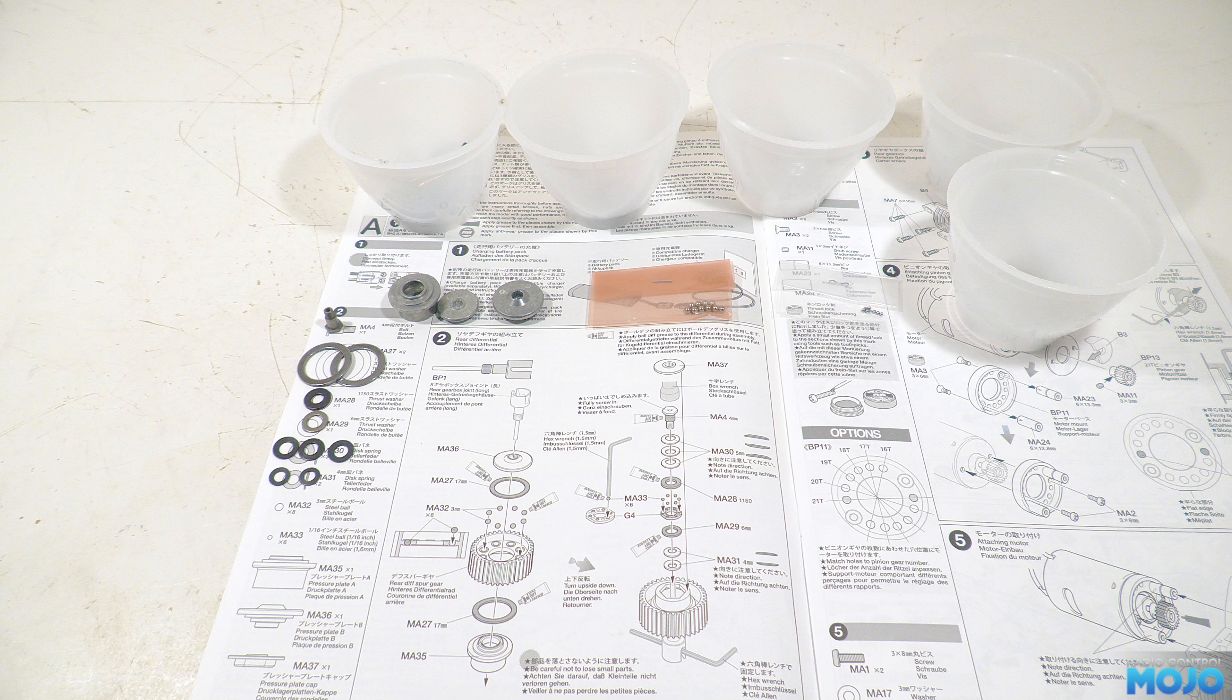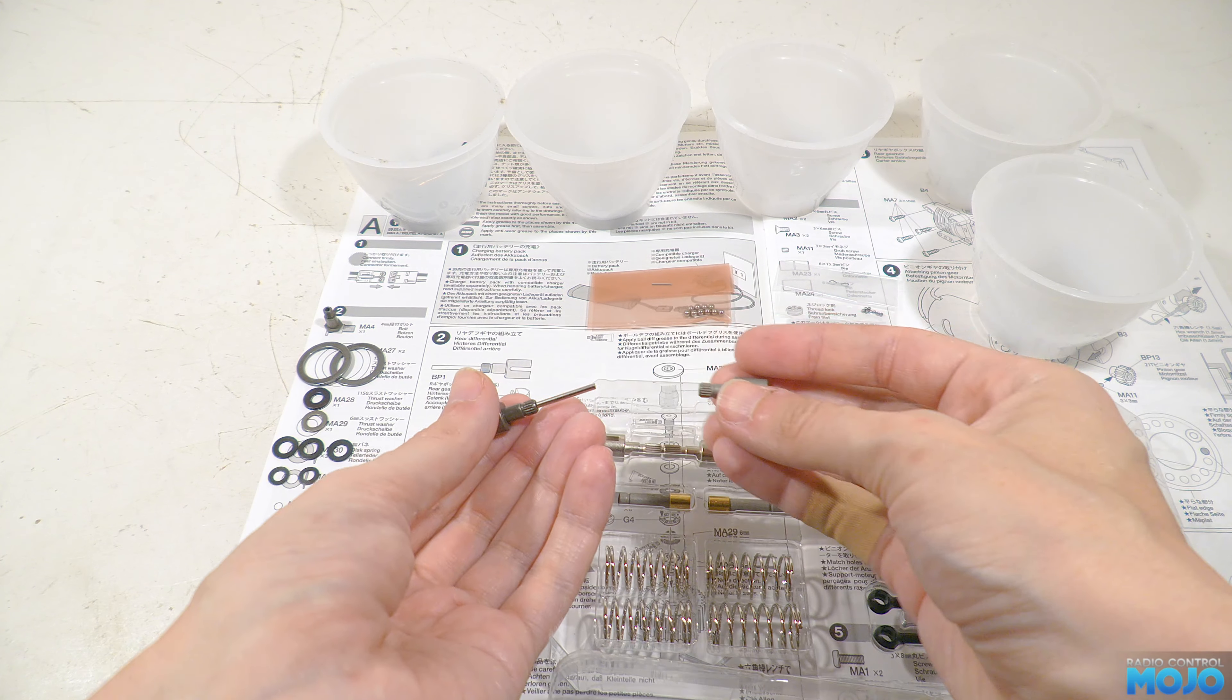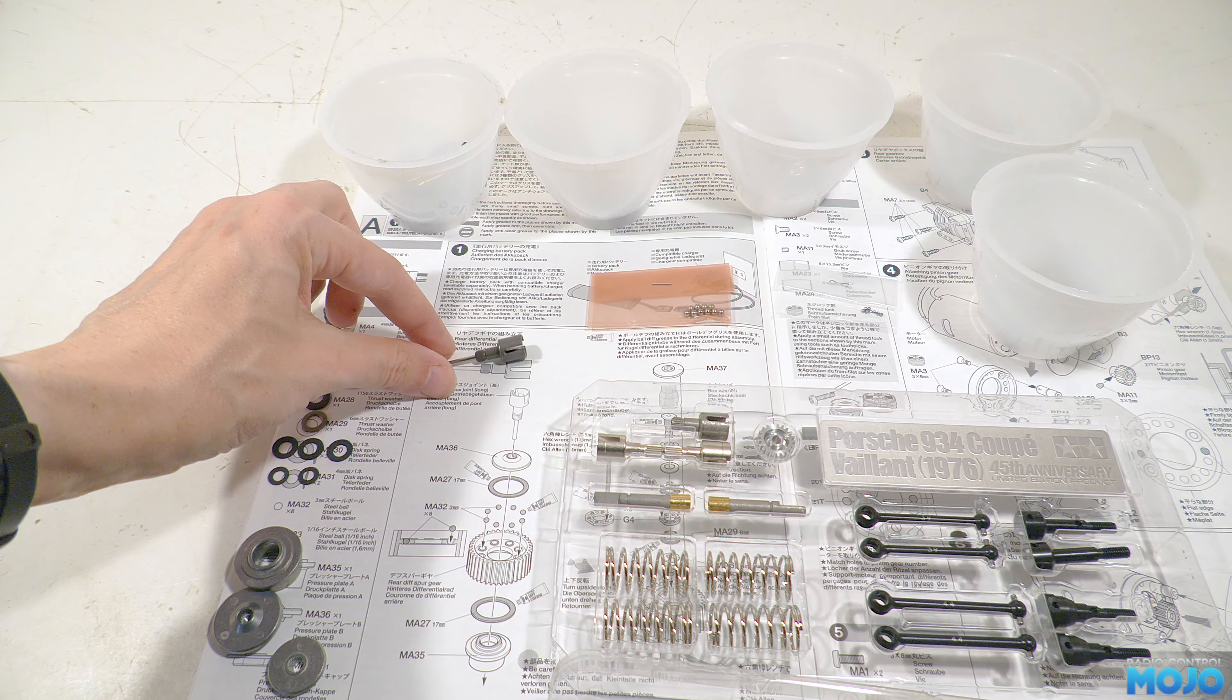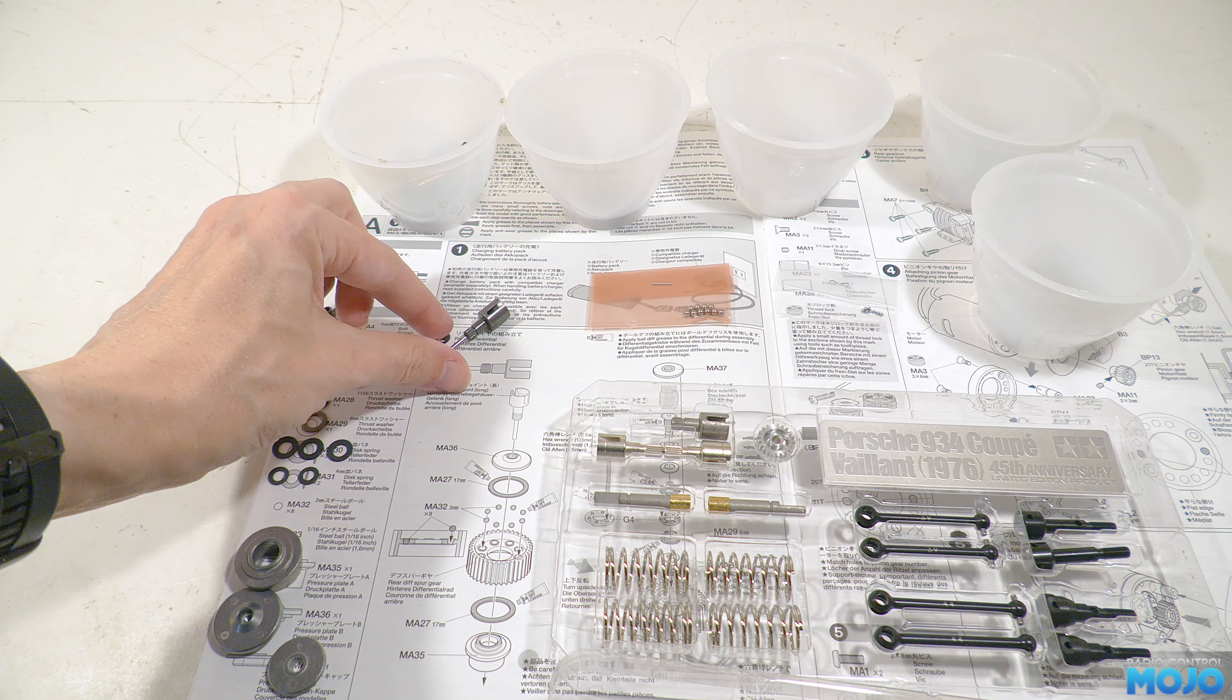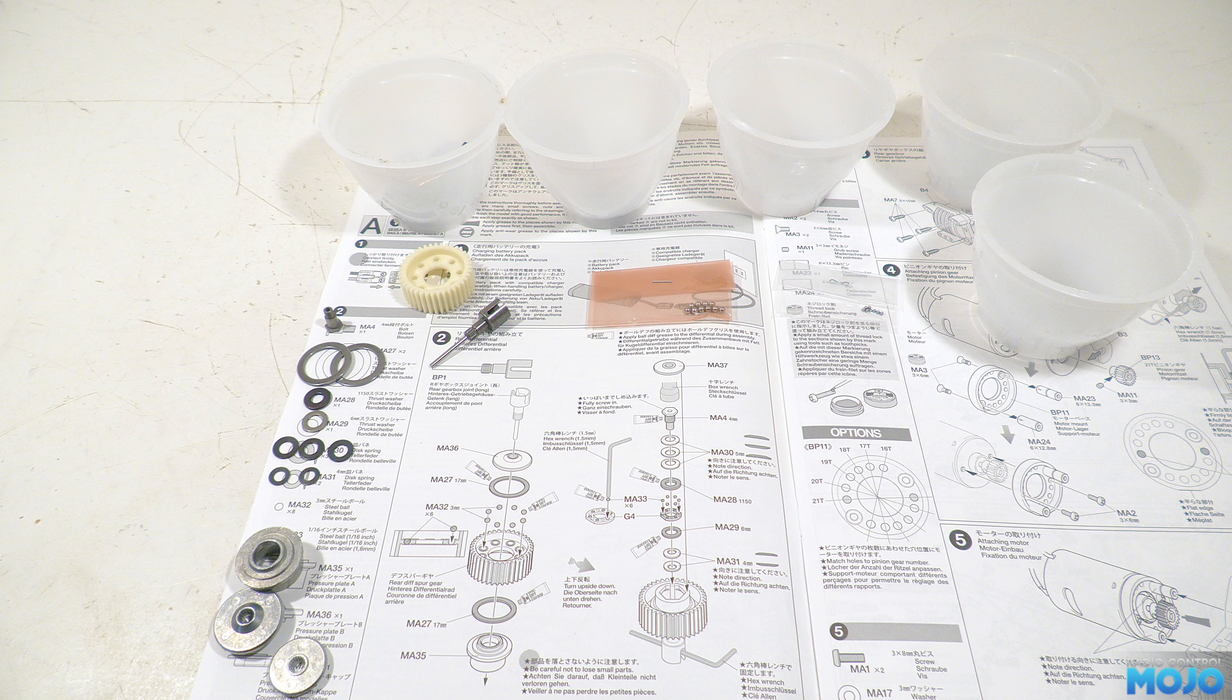We need pressure plates A and B, and the pressure plate cap. Lastly, we need the rear drive cup with the pin from one of the clear plastic boxes. For plastic we need the rear diff gear, and there's G4, the ball cage for the small balls. But I didn't notice that right away though, so we'll grab that in a minute when it's needed.